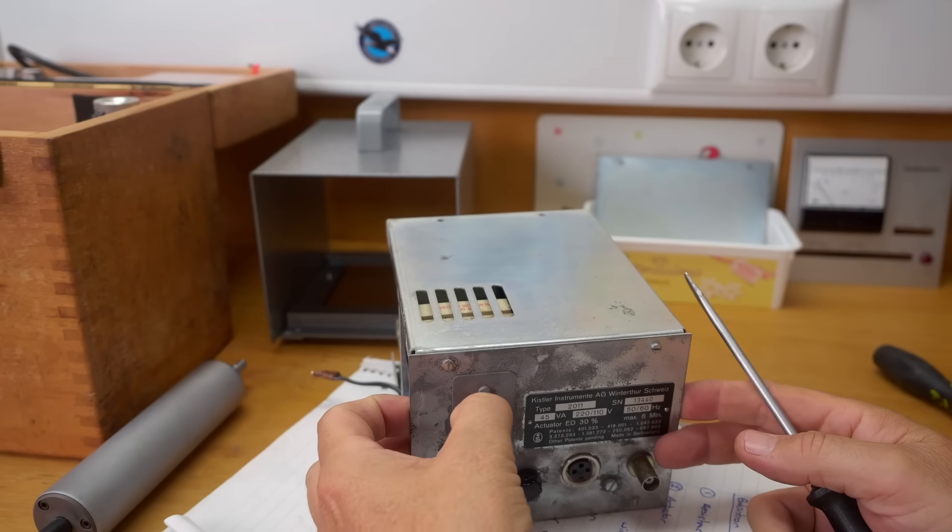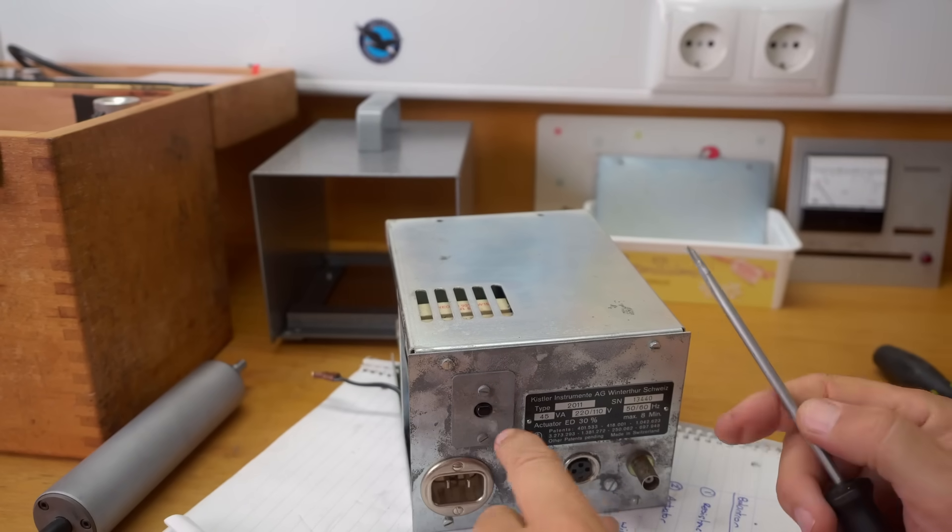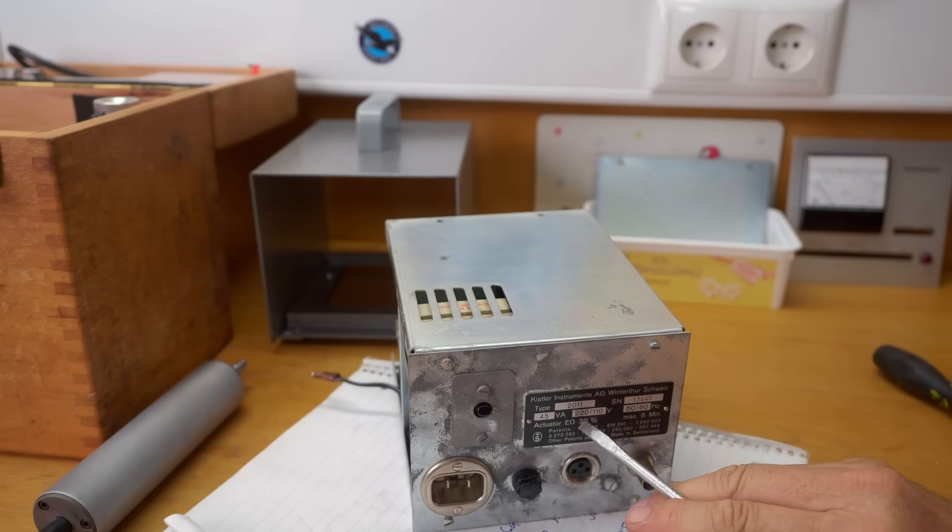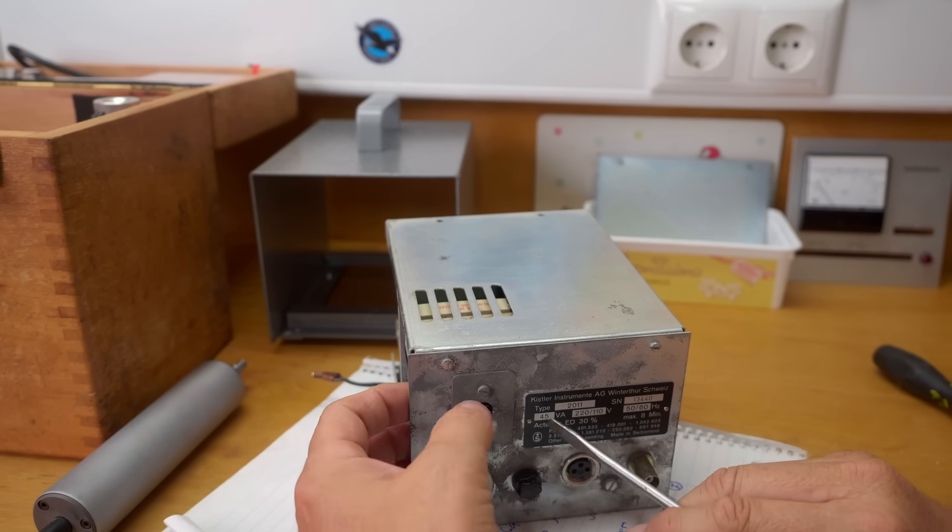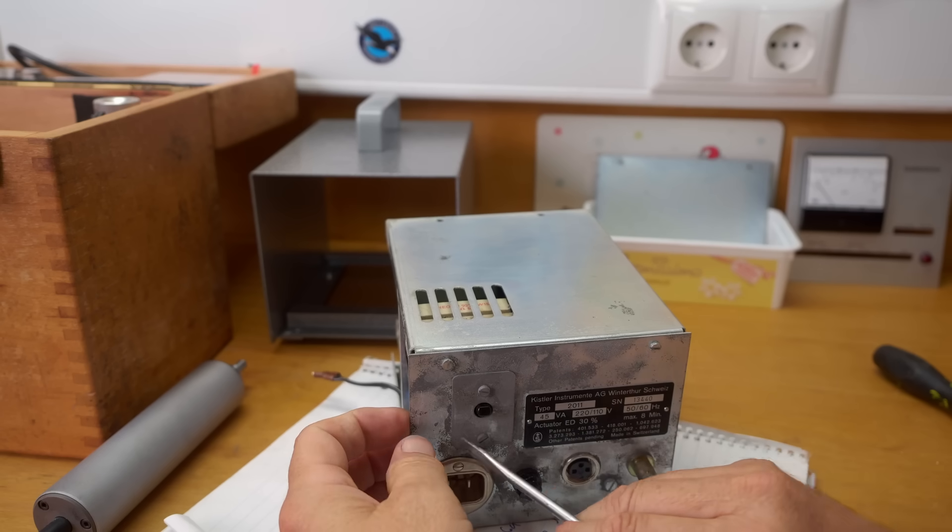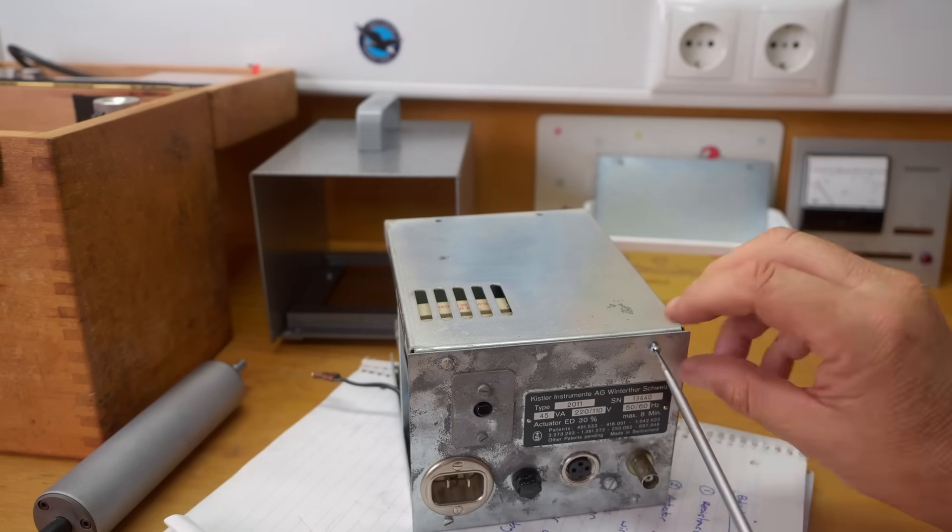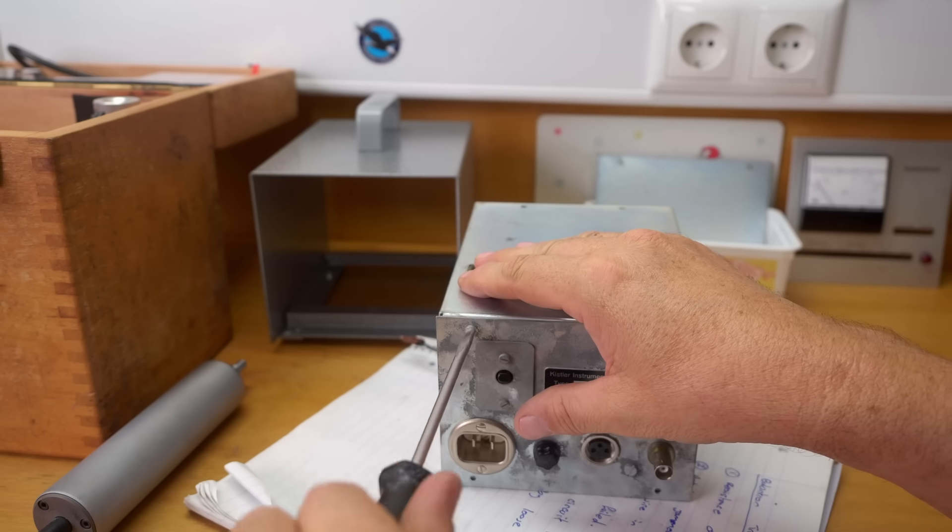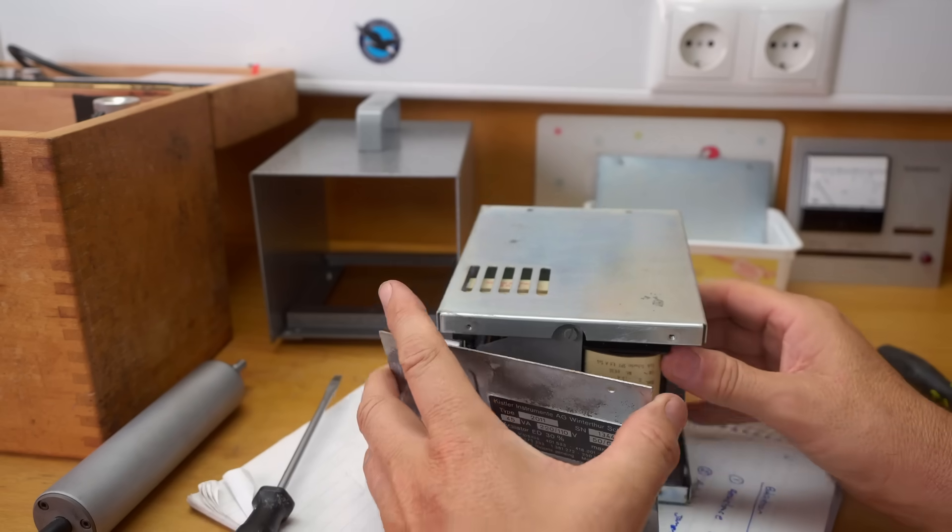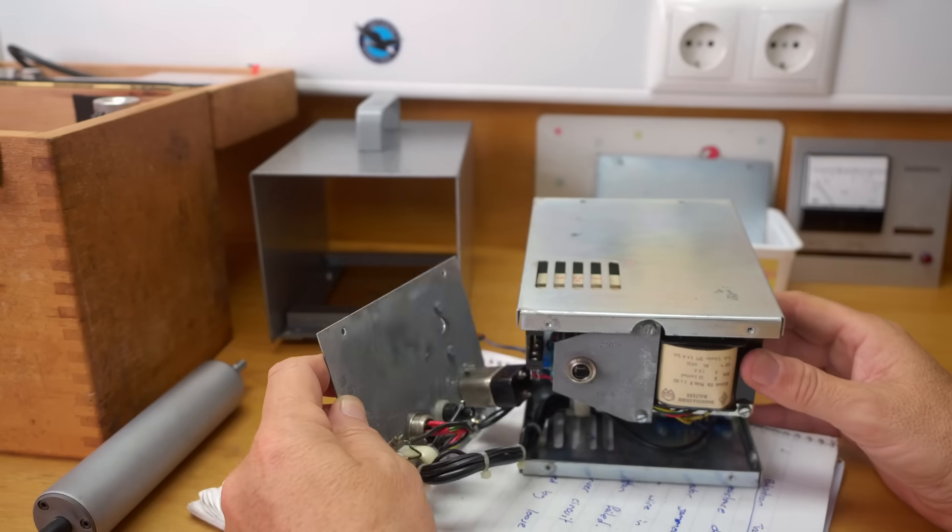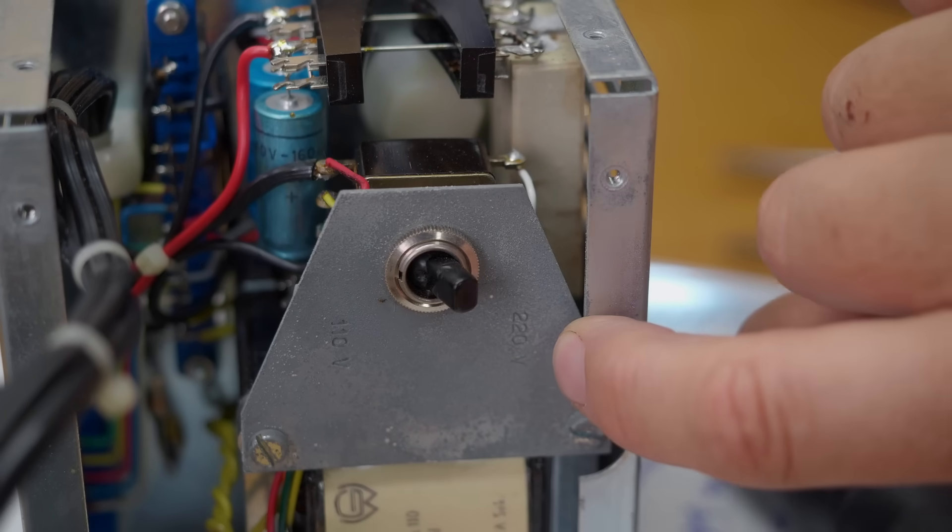By the way that switch there it's been pointed out that that is the switch to go between European 220 and American 110 and you can't move it because that plate there is asymmetric and holds it in the correct position. 110, 220. Still can't find where that screw came from so let's take out the first circuit board.